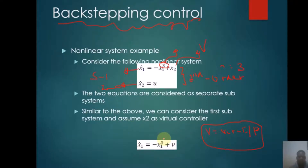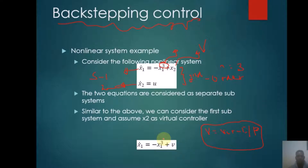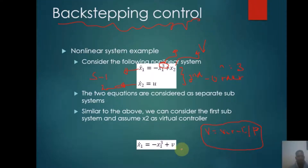The objective is to linearize and stabilize this unstable system. As you can see from this example, the system is unstable. Our target is to stabilize the equation, implement the controller input, and drive our system dynamics. This stabilization involves X1 and X2. By implementing backstepping control, we introduce the control input and stabilize our system. That is the core concept.